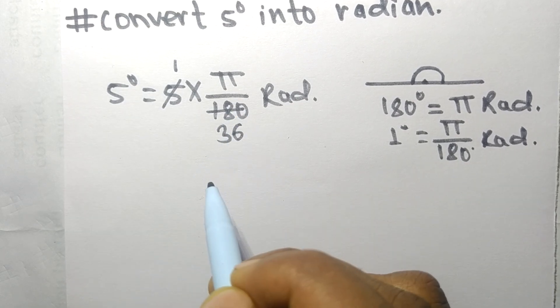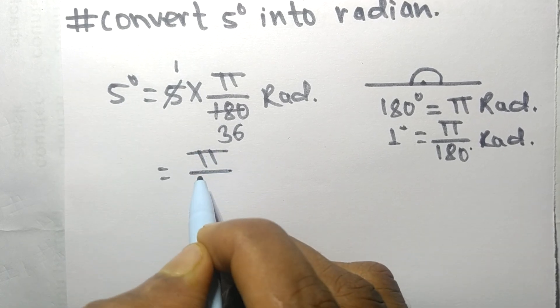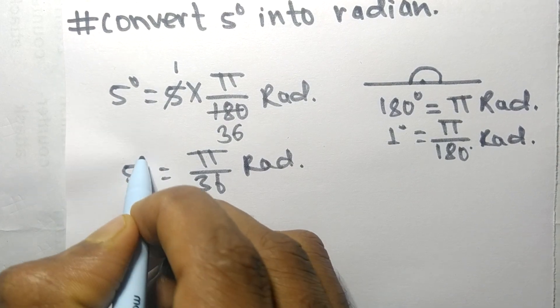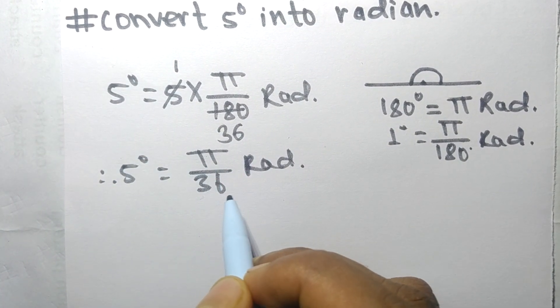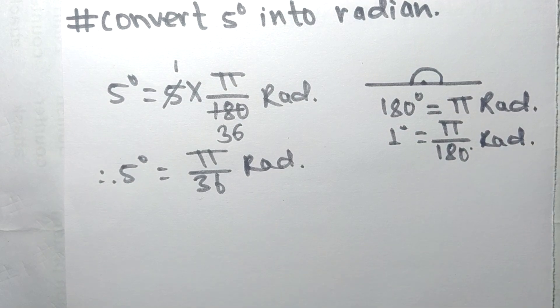So it becomes π/36 radians. Therefore, 5 degrees is equal to π/36 radians. So this much for today and thanks for watching.